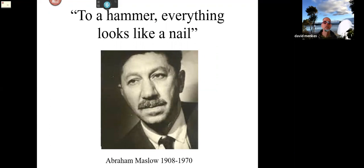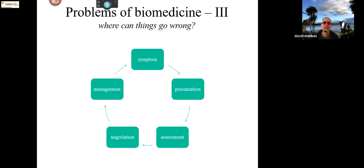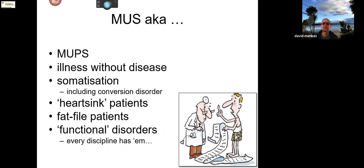The sorts of problems we get into with the inappropriate application of biomedicine can occur anywhere along a conceptual cycle of clinical steps. Medically unexplained symptoms — or functional disorders — are so prevalent that they pop up all over the place in primary care, in hospital care, everywhere. Accordingly, they've accumulated a whole range of different descriptors depending on who has encountered them, with many general terms for this common set of problems, some of which are rather unpleasant or even pejorative.